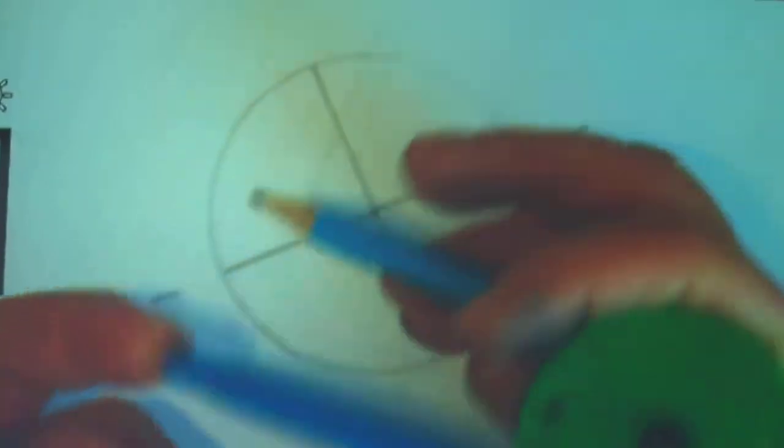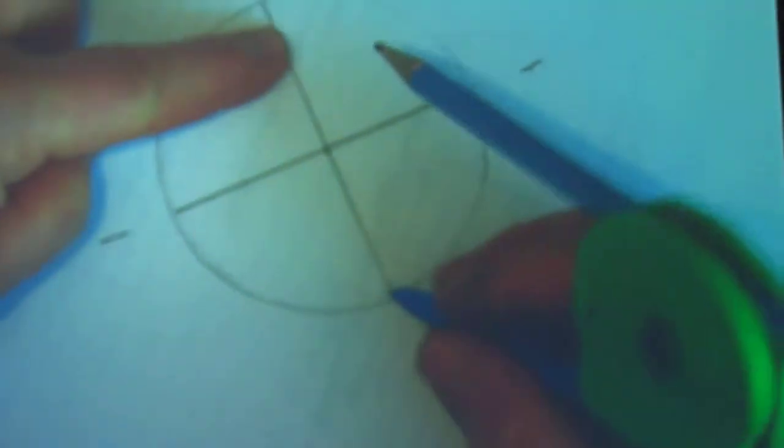Alright, the last step. Now we need to make this into a 3D globe. So, the last thing I'm going to do now is I'm going to take my compass again and I want to put my point on one end of a line. And then I'm going to stretch the pencil up so it goes three-fourths of the way up that line.